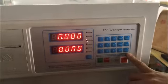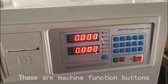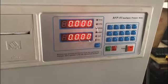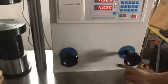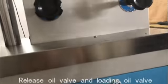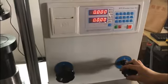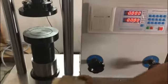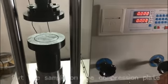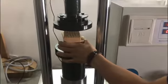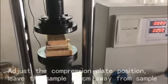This is the operating button. You can read the manual about how to use it. The left is a release valve. The right is a loading valve. Put the sample on the compression plate, or adjust the compression plate close to the sample.